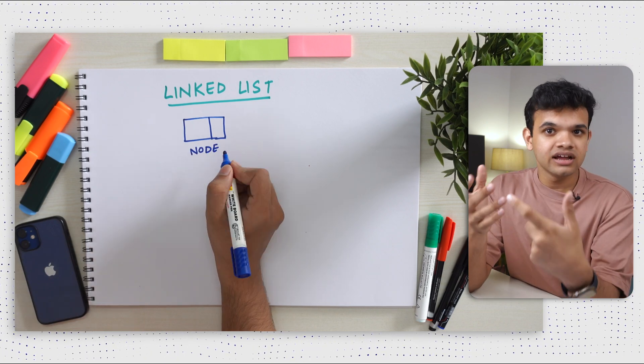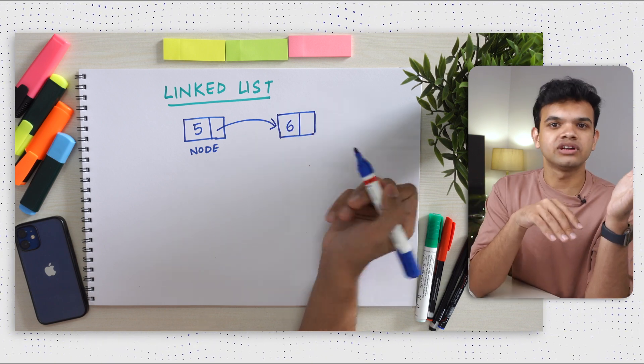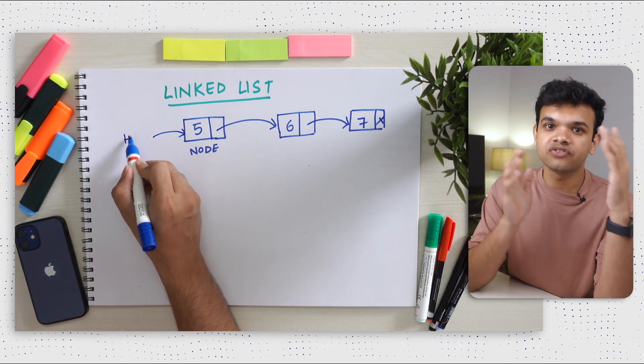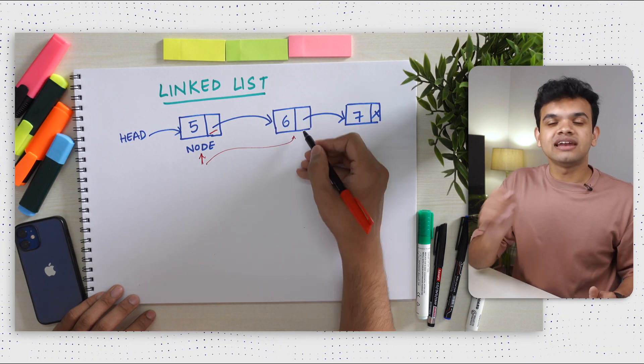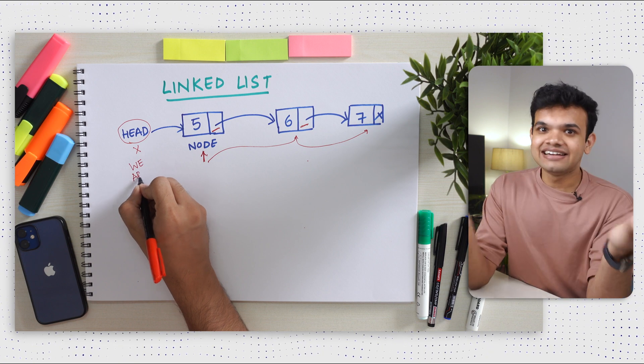Moving on, we have linked lists. A linked list is a type of list, but it follows a completely different approach — we create a node, and whenever we need to add data, we go to the last element, create another node, and link it to the previous node. It's dynamic — we can delete nodes, add nodes, update the size. Every node has two things: some data and a pointer to the next node. We keep the address of the first node as the head node. One caveat is that we cannot randomly access any node — we have to traverse from the first node. If we lose the pointer to the first node, the entire linked list is lost in memory.